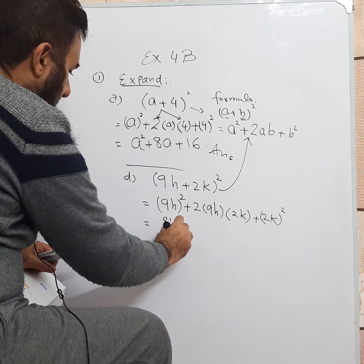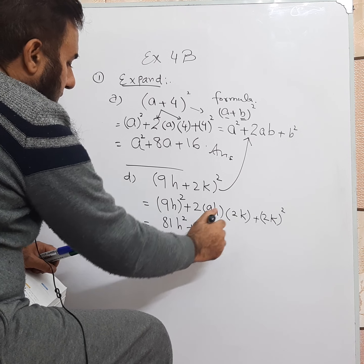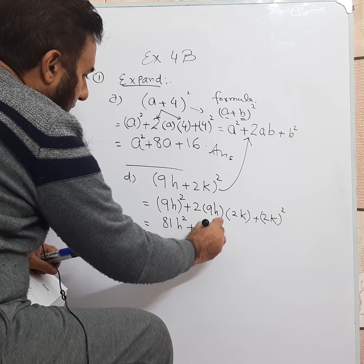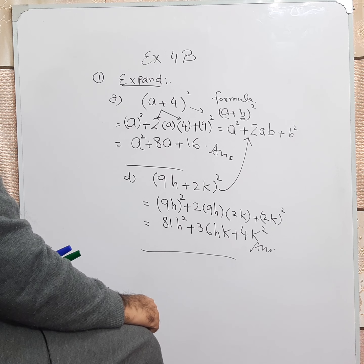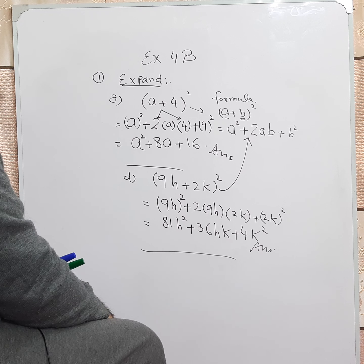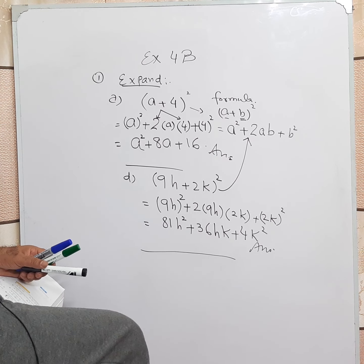Now we will open and take the squares. 9 squared is 81, so we get 81H squared. Then plus 2 multiplied by 9 — that is 18 — multiplied by 2 — that is 36 — so we get 36HK. And then plus 2K squared is 4K squared. So when we expand this expression applying the formula A squared plus 2AB plus B squared, we get the answer 81H squared plus 36HK plus 4K squared.